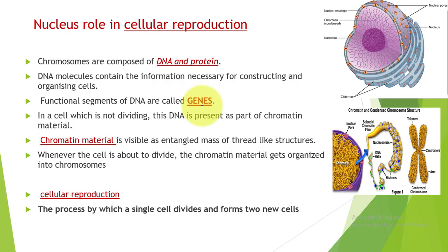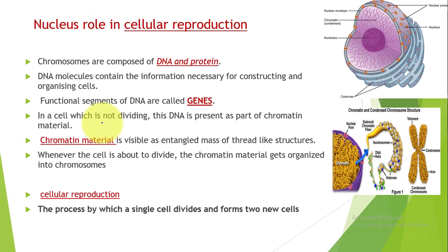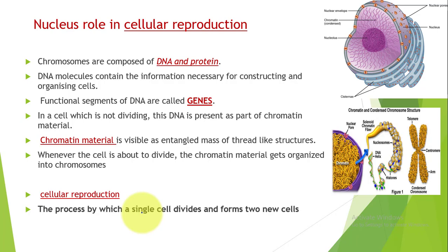Just before cellular reproduction - cell division - this chromatin material organizes itself into chromosomes. So in a cell which is not dividing, DNA is present as part of the chromatin material, visible as an entangled mass of thread-like structures. Whenever the cell is about to divide, this chromatin material organizes into chromosomes. Cellular reproduction is the process by which a single cell divides and forms two new cells. Every time, many cells die and many new cells are formed.